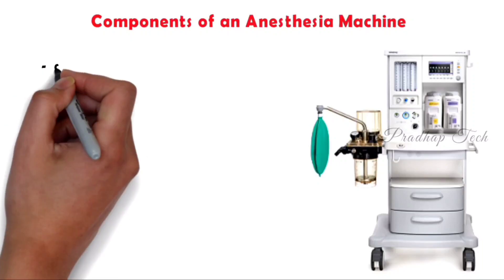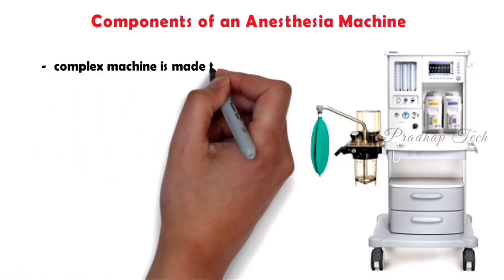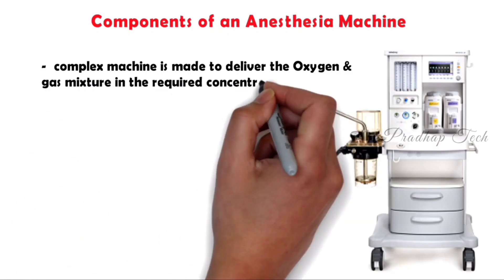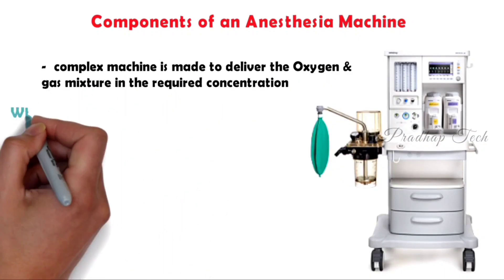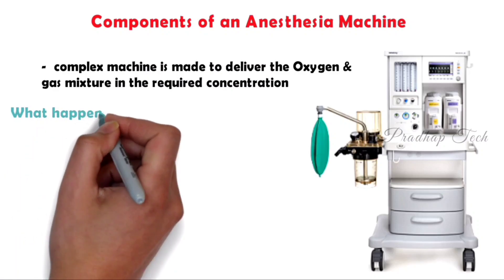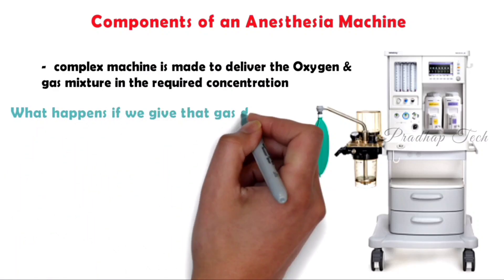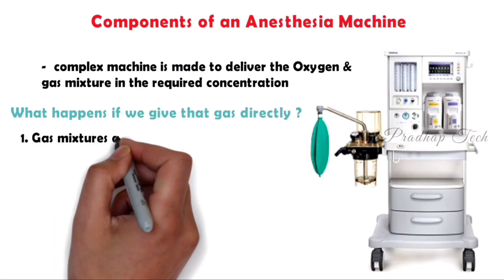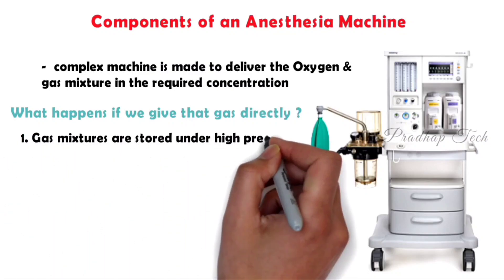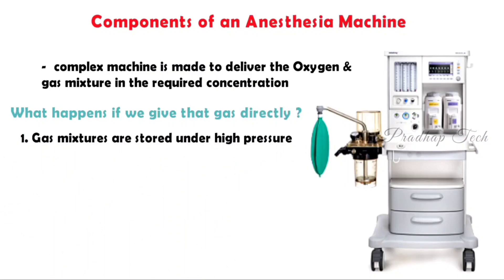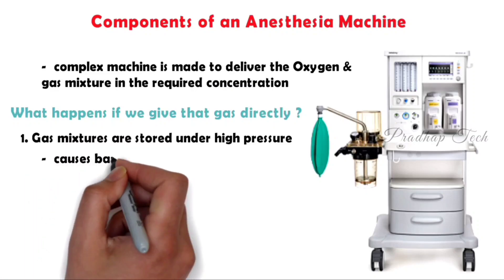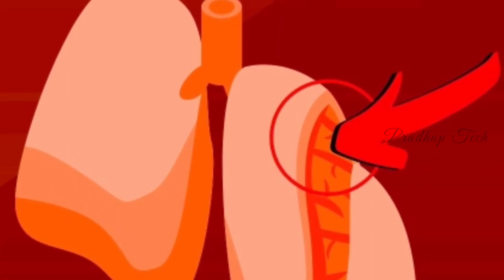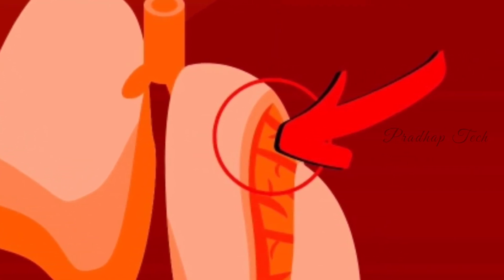An anesthesia machine is a complex machine made to deliver the oxygen and gas mixture in the required concentration. Let us assume what happens if we give that gas directly. First, the gas mixtures are stored under high pressure. If we directly give that gas to the lungs, it causes barotrauma. Barotrauma is nothing but a tissue injury caused by a pressure-related change in body compartment gas volume.